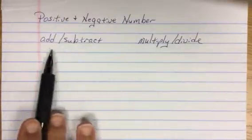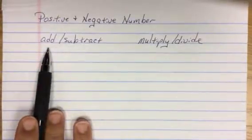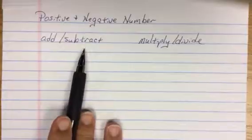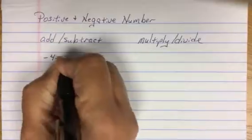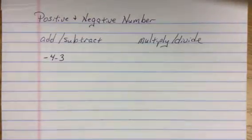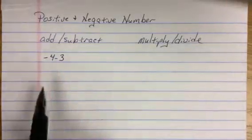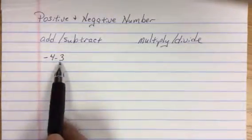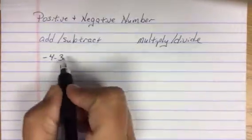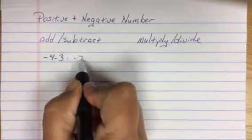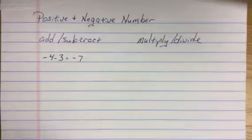When adding and subtracting, you need to think about subtracting as being a negative sign. Negative 4 minus 3. The signs are the same. I see a negative 4 and a negative 3. That means I'm going to add together. So 4 plus 3 is 7. The sign carries through.